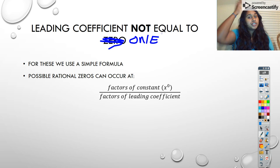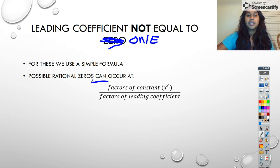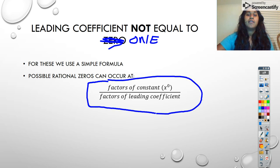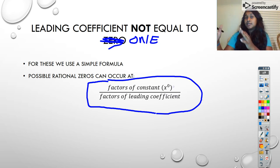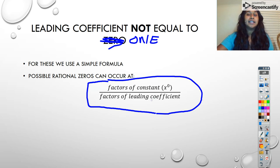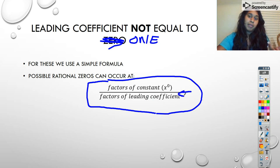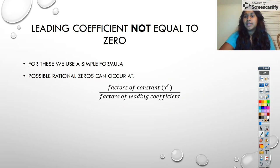What happens when my leading coefficient doesn't equal one? Then we follow what's called the Rational Zeros Theorem, and we follow this formula. You look at the factors of your constant — which is the x to the zeroth term — and you divide it by the factors of your leading coefficient. And technically this is true of all polynomials. It doesn't have to be the leading coefficient not equal to one; if your leading coefficient does equal one, then on the bottom you would just have it divided by one. That's why we don't really talk about that beforehand.